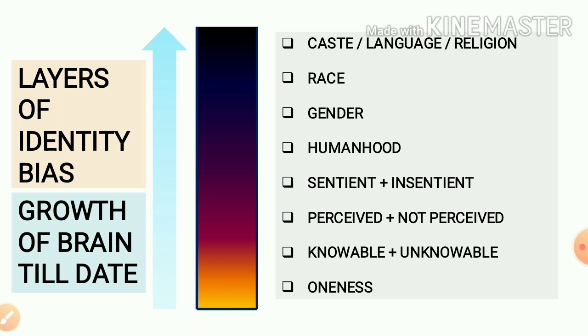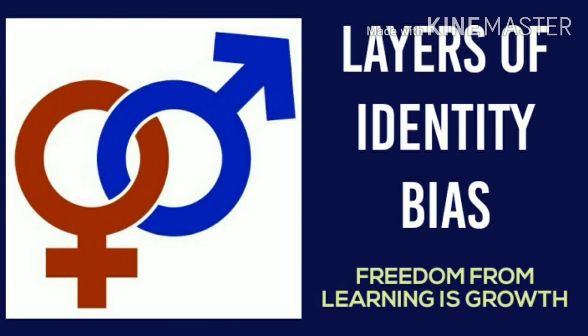The growth till now reverses. What we had learned at the emotional plane — we get dissociated with them again and again. The layers of identity bias get just reversed. The further growth of the brain is the reverse of what order of growth we had seen just now. The layers of identity bias get dissociated from our psyche, mostly in the reverse order.